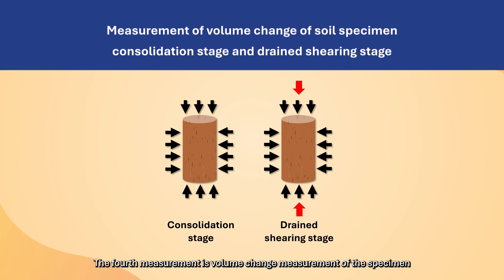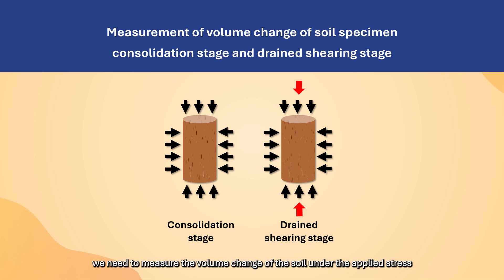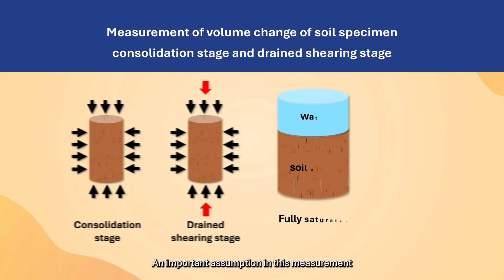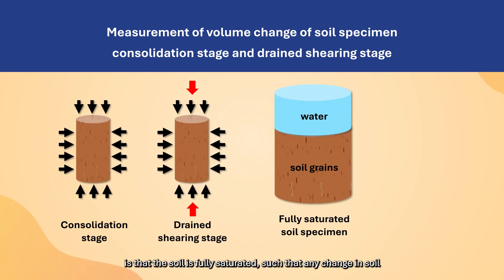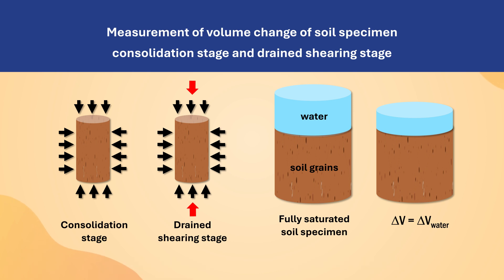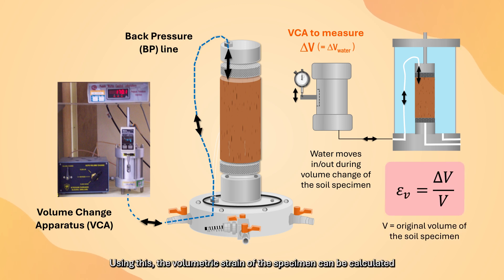The fourth measurement is volume change measurement of the specimen. During consolidation and drained shearing stages, we need to measure the volume change of the soil under the applied stress. An important assumption is that the soil is fully saturated, such that any change in soil volume is represented by the volume change of the water in the soil. The volume change is measured through the back pressure line by an equipment known as the volume change apparatus (VCA), from which the volumetric strain of the specimen can be calculated.